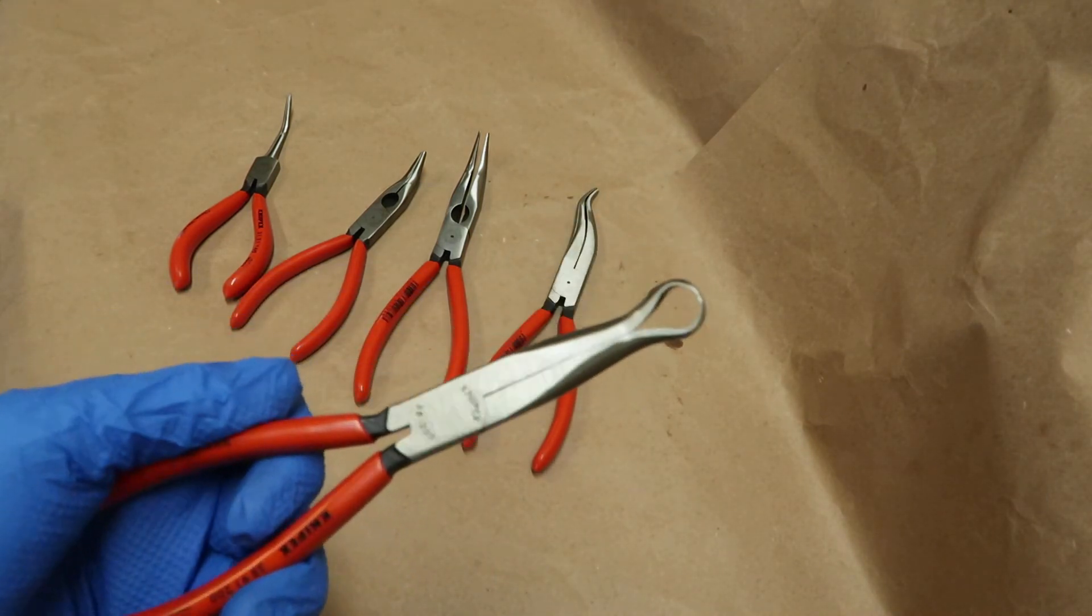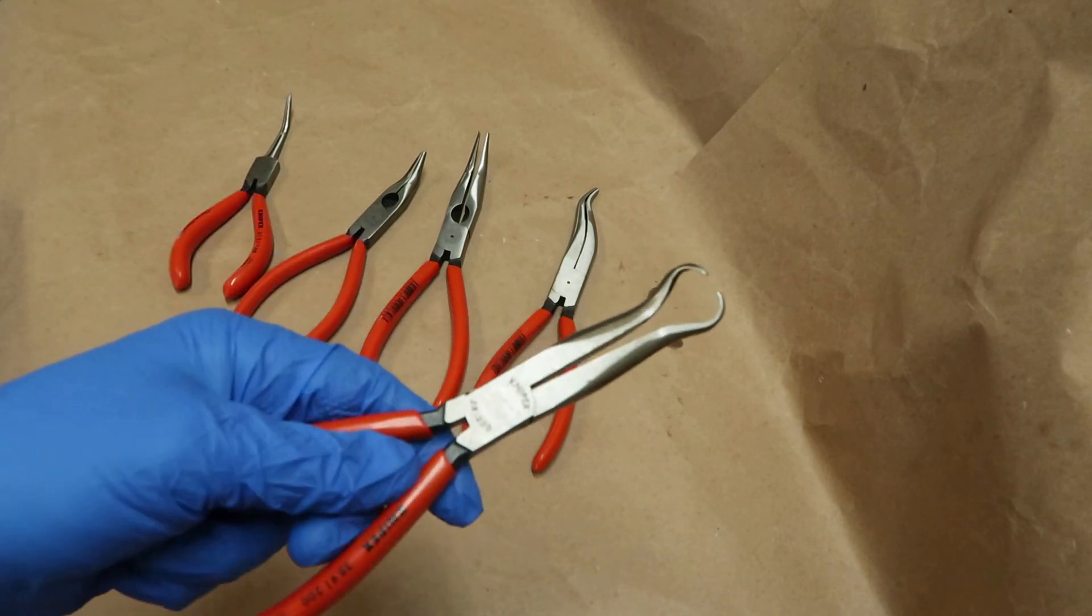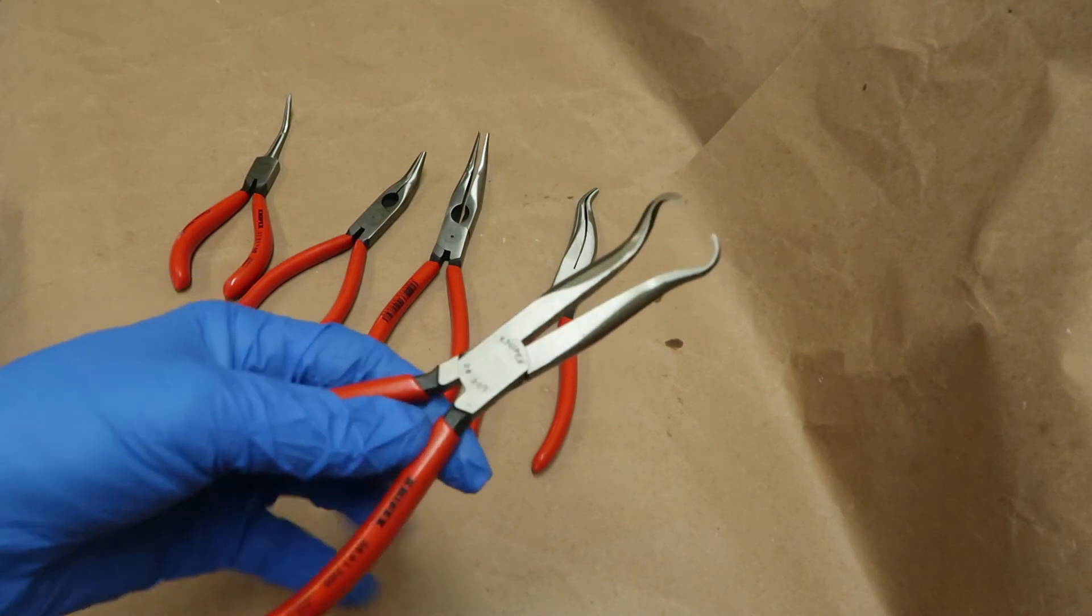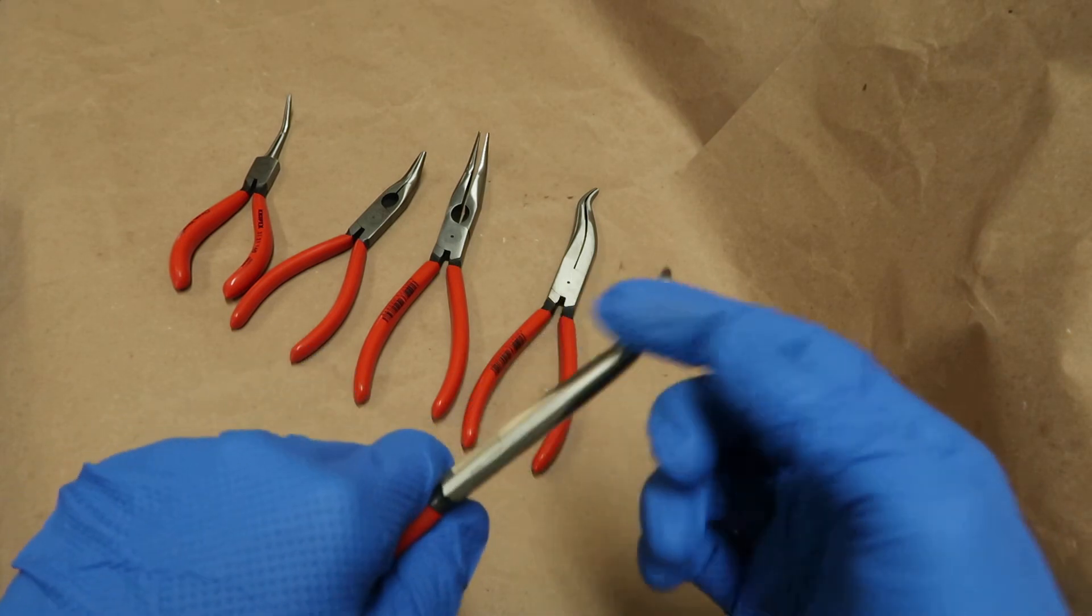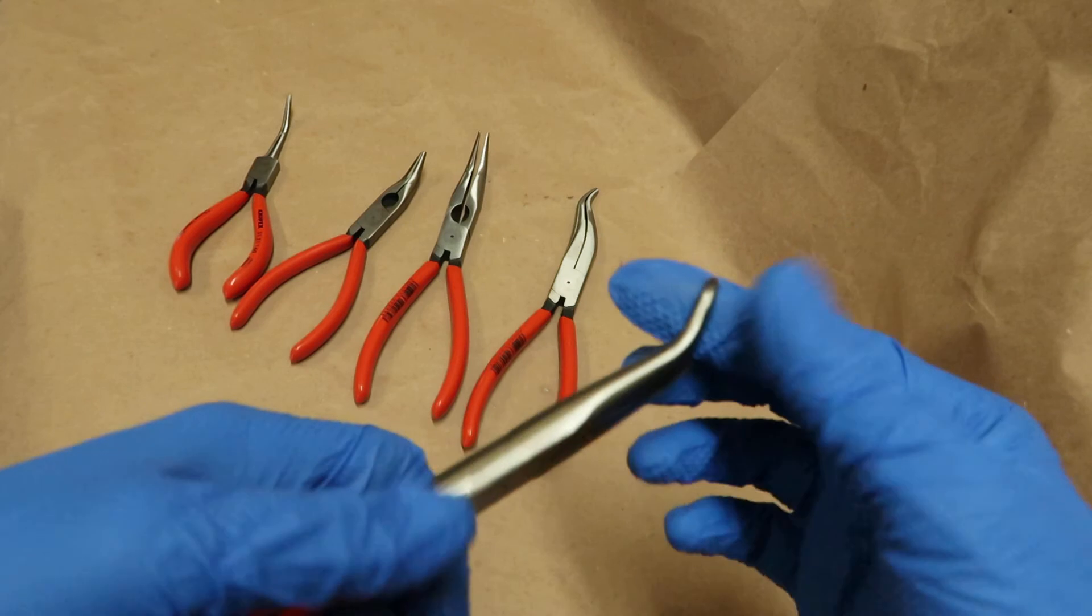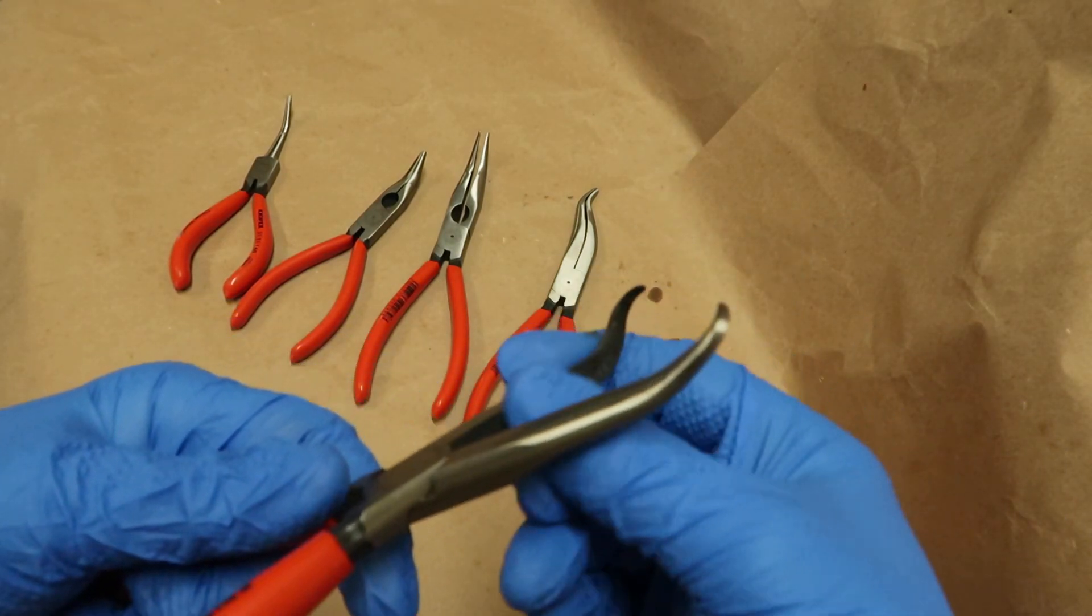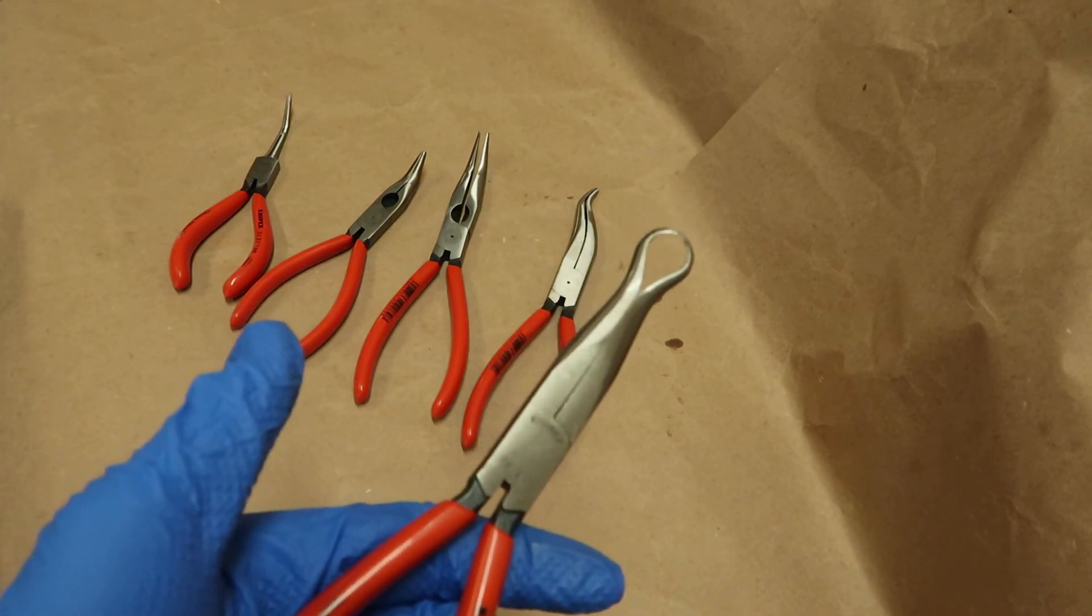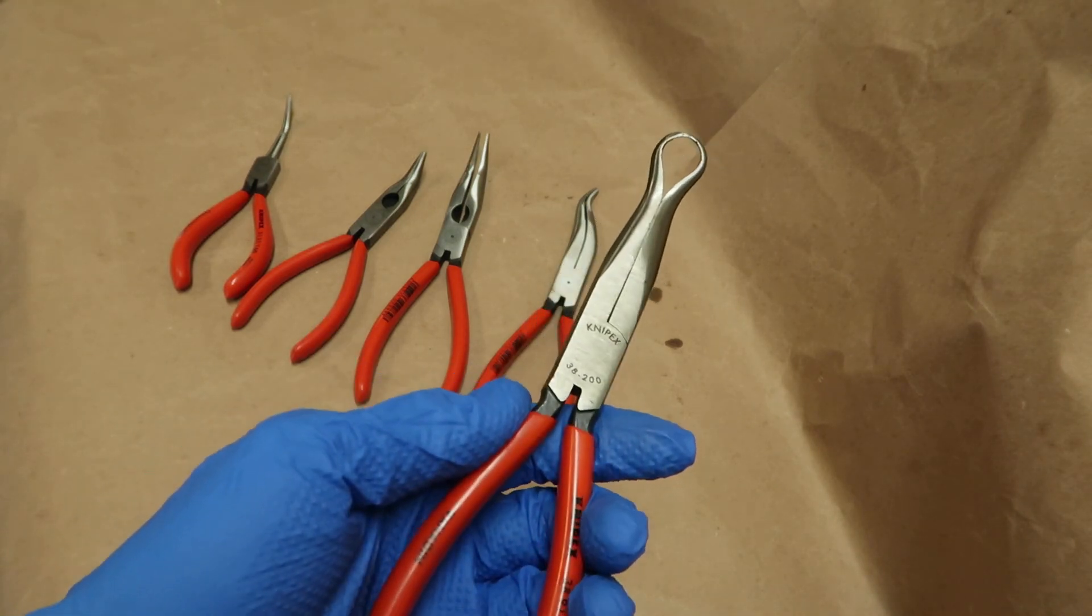This final one, you don't use these too often, but these are designed for pulling the heads of spark plugs off spark plug leads. You'll grab it and just give it a good yank. If you have tubing or something like that, you can also grab the tubing and give it a pull. These are serrated on the inside. You don't use these too often, but when you need it, they work like a charm.